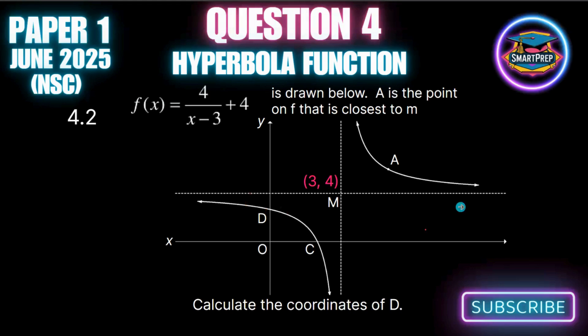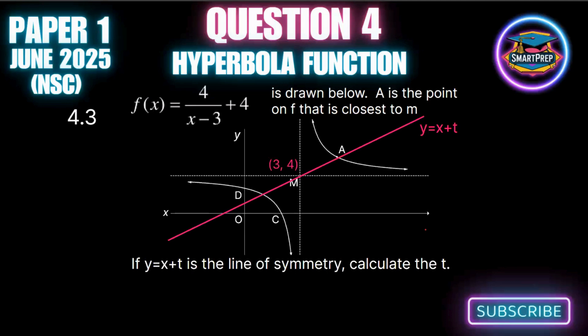Now we are told that y equals x plus t is the line of symmetry and we need to calculate t. When you get your lines of symmetry, I like to look at it visually. The lines of symmetry of a hyperbola—you just have to ignore the 4. So you write it like this: y equals x minus 3 plus 4. You put the part that's under the 4 in brackets, and then it makes it plus and minus because you get two axes of symmetry.